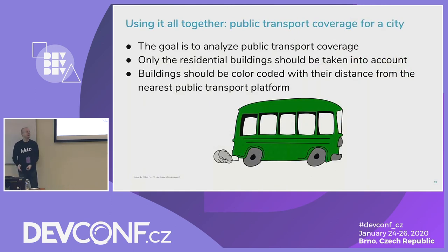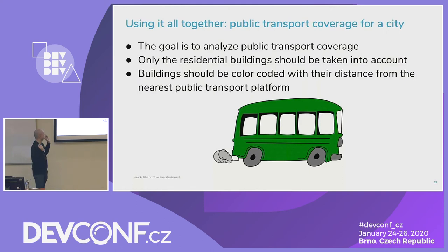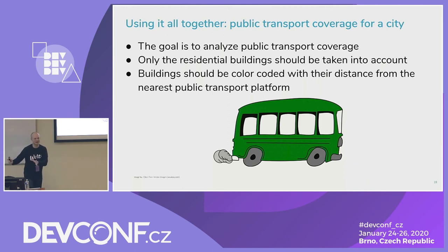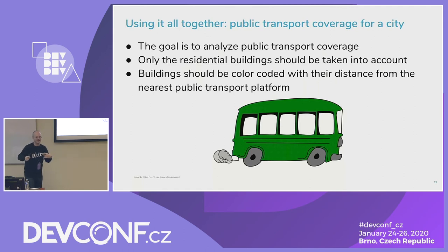Let's try to do something useful. Let's calculate public transport coverage. How do I define it? Take all the residential buildings, take all the public transport platforms, find the distance to the nearest one.